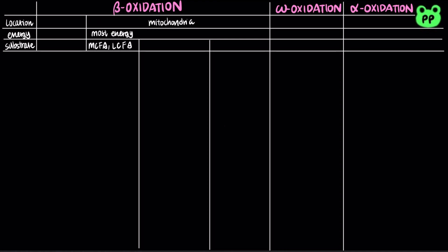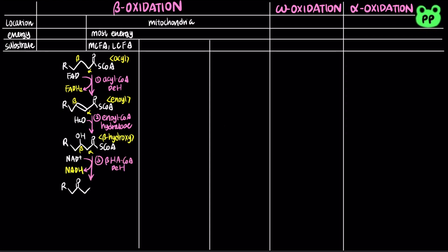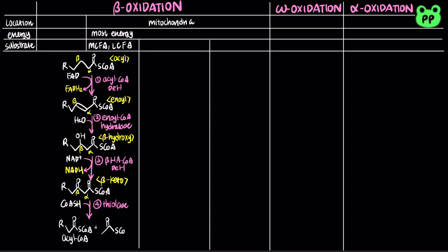To recap, beta-oxidation of saturated fatty acids involves four repeating steps that oxidize and release the two carbons from the carboxyl end as acetyl-CoA. First, acyl-CoA dehydrogenase produces a double bond between the alpha and beta-carbons, forming trans-enoyl-CoA, which is coupled to the reduction of FAD to FADH2. Next, enoyl-CoA hydratase catalyzes a hydration reaction, producing beta-hydroxy-acyl-CoA, coupled to the reduction of NAD+ to NADH. Lastly, thiolase cleaves the carboxy-terminal two-carbon fragment of beta-keto-acyl-CoA as acetyl-CoA, producing a shorter acyl-CoA that can begin a new round of beta-oxidation.